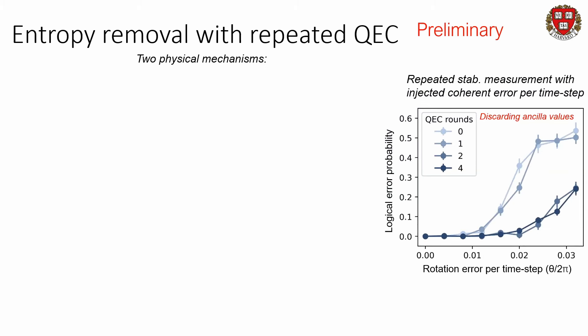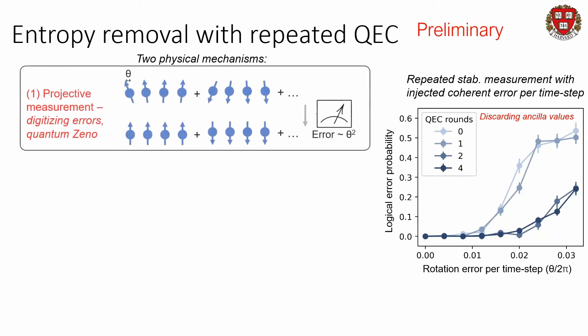One mechanism, quite remarkable although well understood, is the projective measurement effect — coming back to the fact that we do analog computation but the errors are digital. Here, we're not even looking at the ancilla values, we're doing stabilizer measurement but don't look at the ancilla values. Still, the logical error is greatly suppressed by repeated error correction. The reason is the quantum Zeno effect: you have some state, you deviate slightly from it by doing some global coherent error, but as you measure your stabilizers, you project back down into some state with error probability going as theta squared. If you don't do repeated correction, the error builds and you quickly go away from your target state. If you do repeated error correction, theta squared stays small and you don't deviate from your intended logical state.